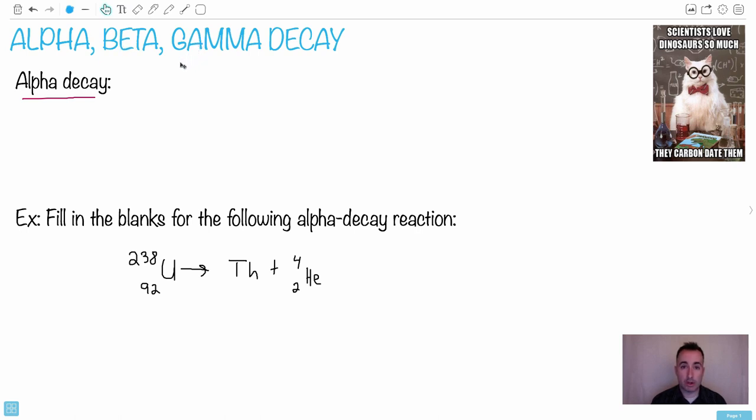This is to do with a nucleus, and it can spontaneously decay. It can just become a new element by itself. There's a few different types of it, and this is why we're going to talk about these three types. In fact, mostly alpha and beta.